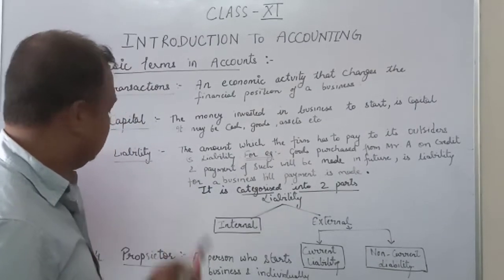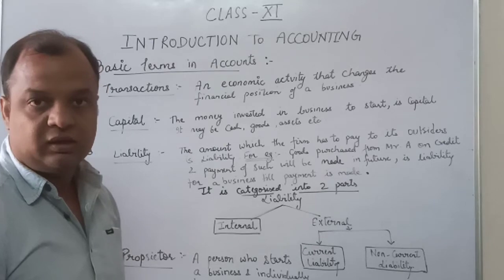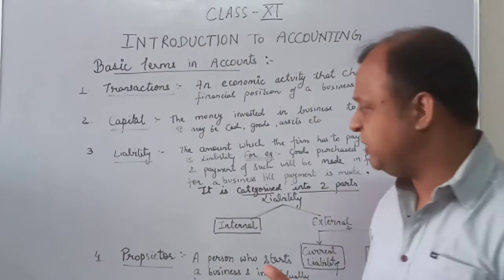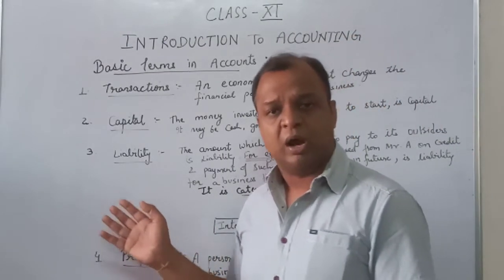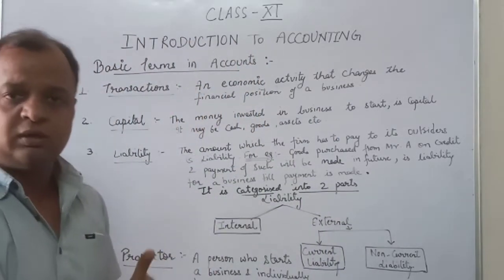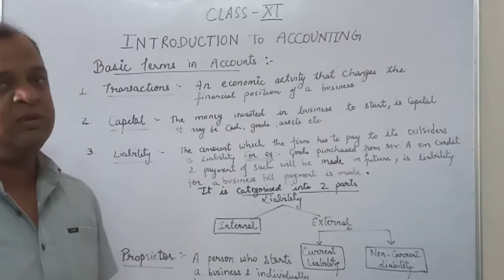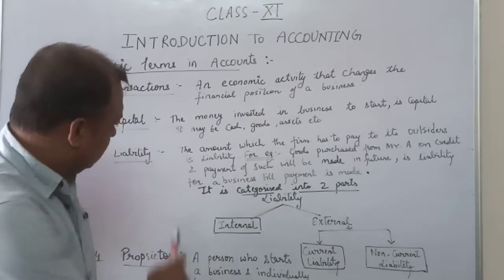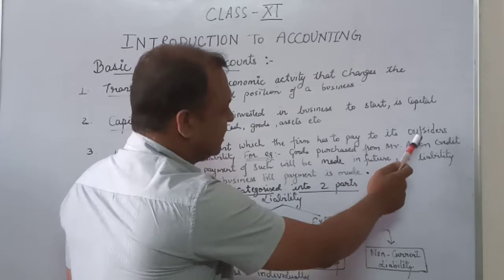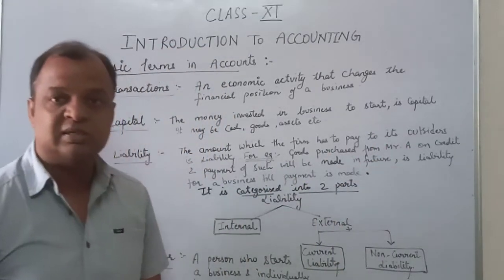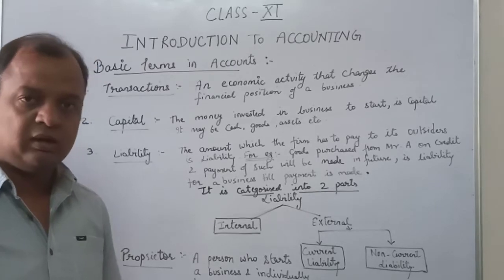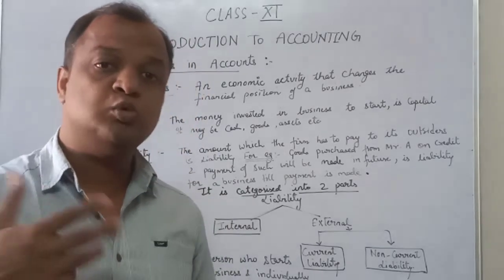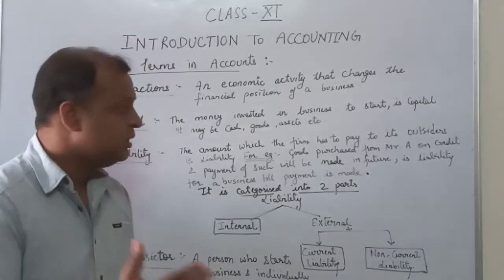The third term is liability. I am trying to make it easy because you will be reading these terms for the first time, and once you are clear, these terms will be used in your questions when we solve them in further classes. The amount which the firm has to pay to its outsiders is liability — very simple to understand. Anything which a business has to pay to outsiders who are apart from the business.